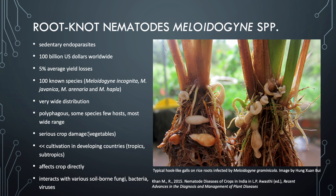They can cause serious crop damage, particularly in vegetables. It is difficult in some tropical and subtropical developing countries to actually cultivate vegetables as a result of the severity of the infestation that can occur. These nematodes can affect the crop directly or interact with various soil-borne fungi, bacteria and viruses to further damage the plant. The image on the right shows the specific hook-like galls present on rice roots when infected with Meloidogyne graminicola.